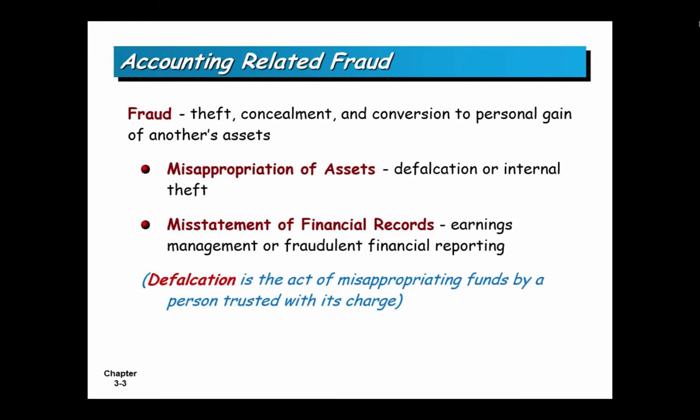Fraud is the theft, concealment, and/or conversion for personal gain of another's assets. It's the misappropriation of assets — something called defalcation. Defalcation is the act of misappropriating funds by a person who was entrusted with protecting those funds, like the treasurer of the PTA who steals the PTA's money. If you have a Venn diagram, fraud is the big circle and defalcation is a little circle inside it — it's a subset of fraud.